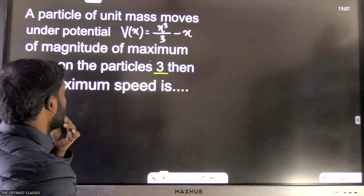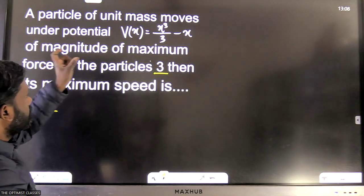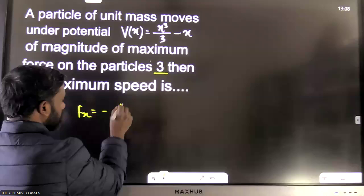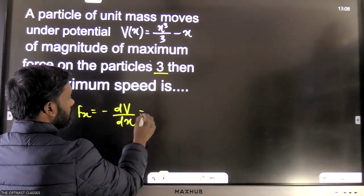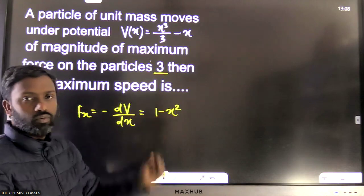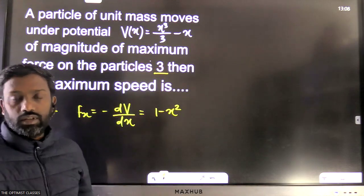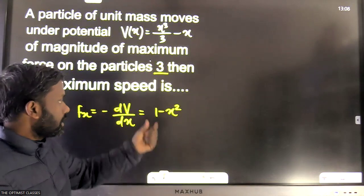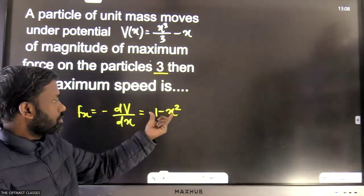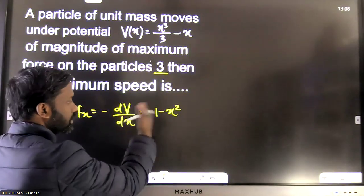Let's first focus on force. The force is given by fx = −dV/dx, which gives us 1 − x². Now if you increase x — for example, put x = 5, you get a force magnitude of 24. But the question says the maximum magnitude of force is 3. If you put x = 2, you get force = −3, meaning magnitude is 3. So it is clear from the question that the particle is not going beyond x = 2.